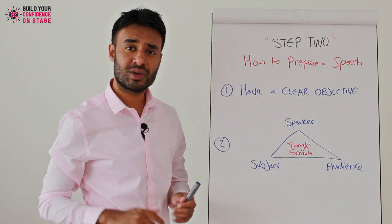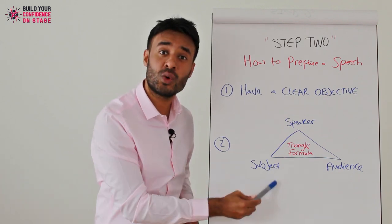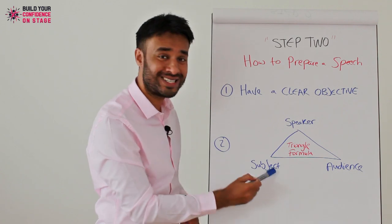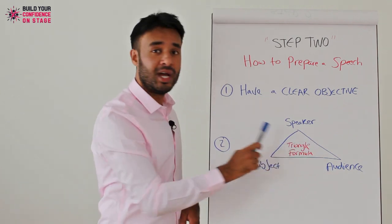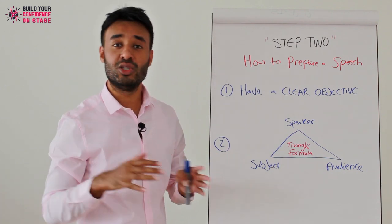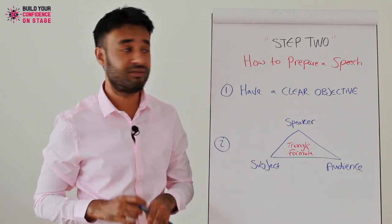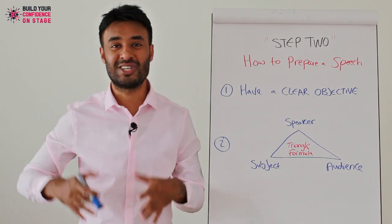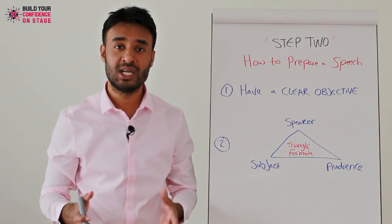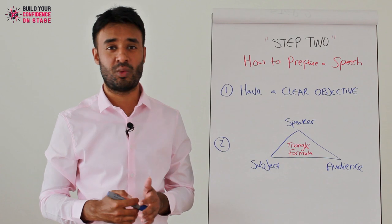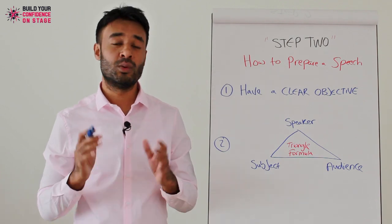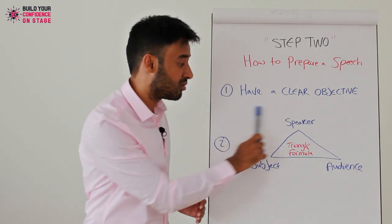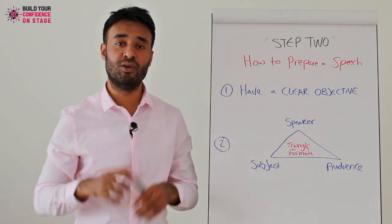Even if you don't know as much as the audience, perhaps you can provide a unique twist to the subject. Perhaps you've done your own research, or you have a unique perspective and idea about an existing subject in which the audience is already an expert. Your angle gives a new dimension, a new twist to the existing subject. So all of these play a critical factor in how to prepare a speech. I want you to be the person who gives speech preparation enough time, energy, and thought, so that you're adding value and not winging it. Download the task sheet, complete the task, set a clear objective, and do your research into the triangle formula for your upcoming event.